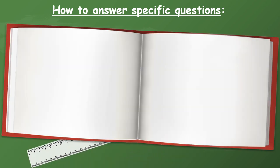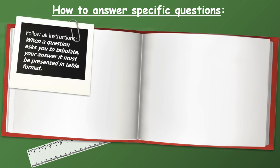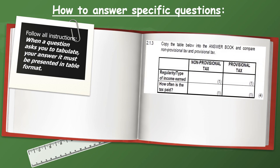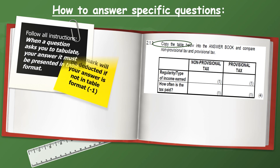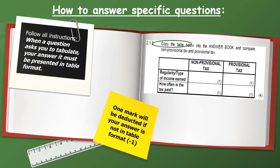When a question asks you to tabulate your answer, it must be presented in a table format. For example, if it says 'copy the table below into your answer book and compare non-provincial text and provincial text' — remember to circle the verb which is 'copy the table.' One mark will be deducted if your answer is not in table format, and at this stage we do not want to lose any more marks.